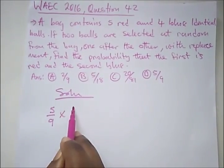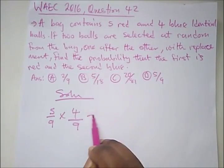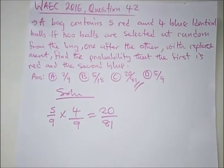And what's the probability that the second would be a blue ball? 4. So multiply by 4 over 9. Here, what do we have? We have 20 over 81. And this is our right answer.